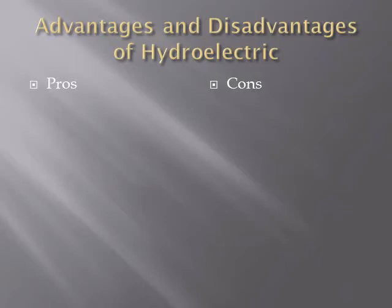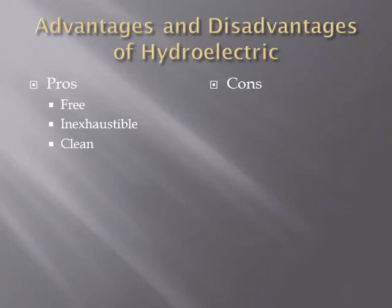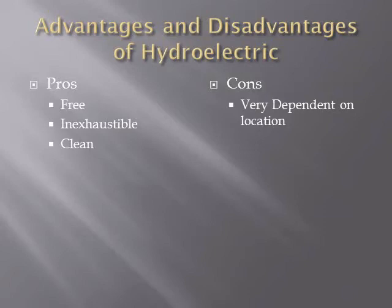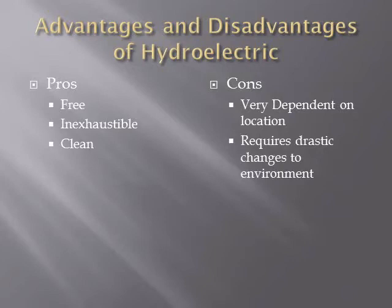The advantages and disadvantages of hydroelectric energy: the main pro is that it's essentially free once built — relatively cheap to maintain and keeps producing energy. It's also inexhaustible since water is always coming down from mountains, and it's clean, meaning it doesn't produce CO2 or other pollutants. A con is that it's very dependent on location — you can only do this in certain places. Washington state is a great example because it has mountains and lots of rain.